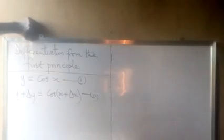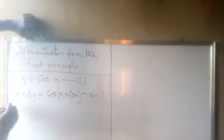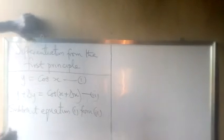By subtracting equation 1 from equation 2, we have Y plus delta Y minus Y equals cos(X + delta X) minus cos X, left from left and right from right. So delta Y equals cos(X + delta X) minus cos X.